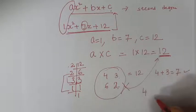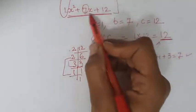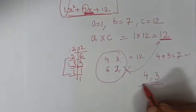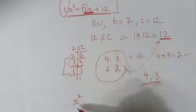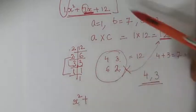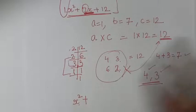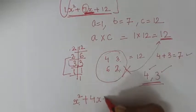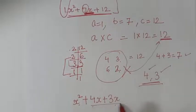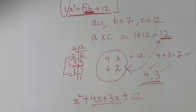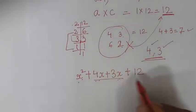We got the two factors: 4 and 3. Now, in place of 7x, we write these two factors. We write: x² plus 4x plus 3x plus 12. Check: 4x + 3x = 7x. Yes, that is correct.